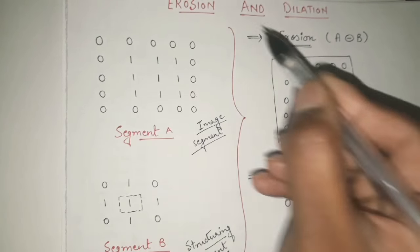Wherever we are already having one, they will obviously come as one in dilation because at least the center is satisfied. So all the original ones remain. Additionally, where the top is satisfied, those positions also come as one. Where the left side is satisfied, those also become one. But if top, bottom, left, and right are all not satisfied, we get zero. This is the complete dilation answer.